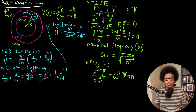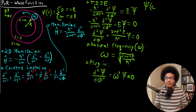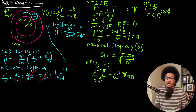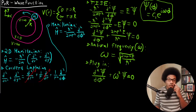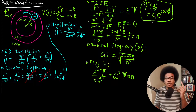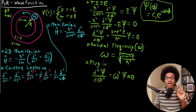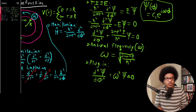We now have a very simple differential equation that we've seen before. The function that solves this differential equation is a constant times an exponential: e to the i omega phi. So now the only things we need to do to get the actual wave function for the particle on the ring are: first, consider the boundary conditions, and second, get the normalization constant.